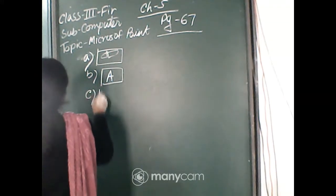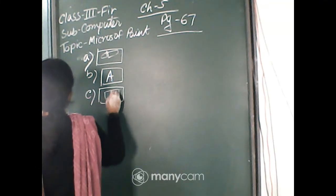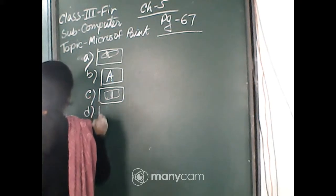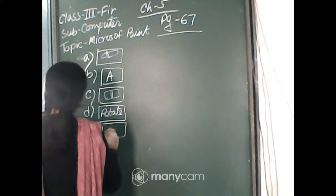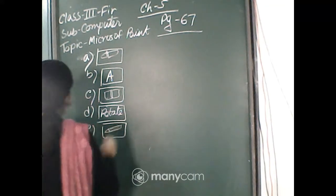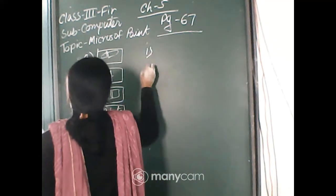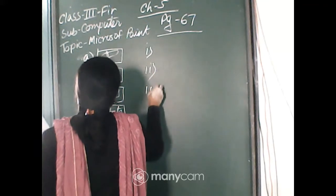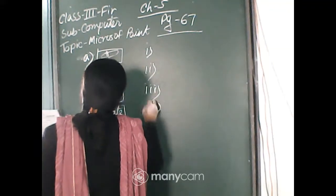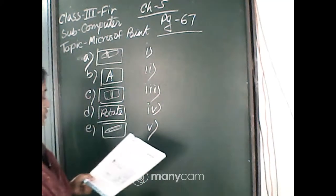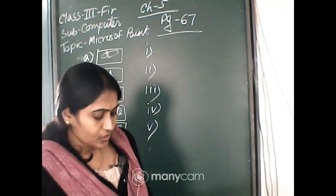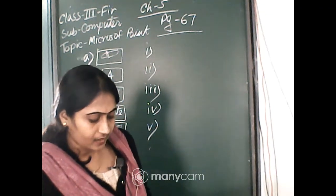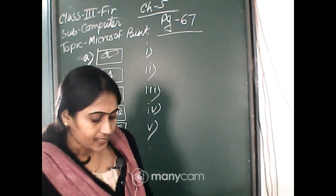Number C is the Eraser tool, number D is Rotate, and number E is the Pencil tool. I will not write the right-side sentences in your book — you have your book with you. Number A, Pick Color tool, is used to copy a color from one area of the drawing to another area of a drawing.